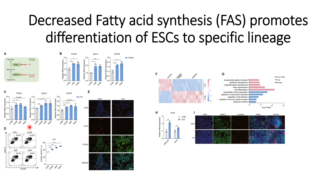In the control, SOX17 and CXCR4 expression is around 35.8%. For 2.5 micromolar C75 they can see an increase to 42.6%, at 5 micromolar it goes up to 48.6%, and for 10 micromolar it reaches 50.9%. Statistical analysis of this flow cytometry data shows a continuous increase in marker genes for definitive endoderm with increasing inhibitor concentration.